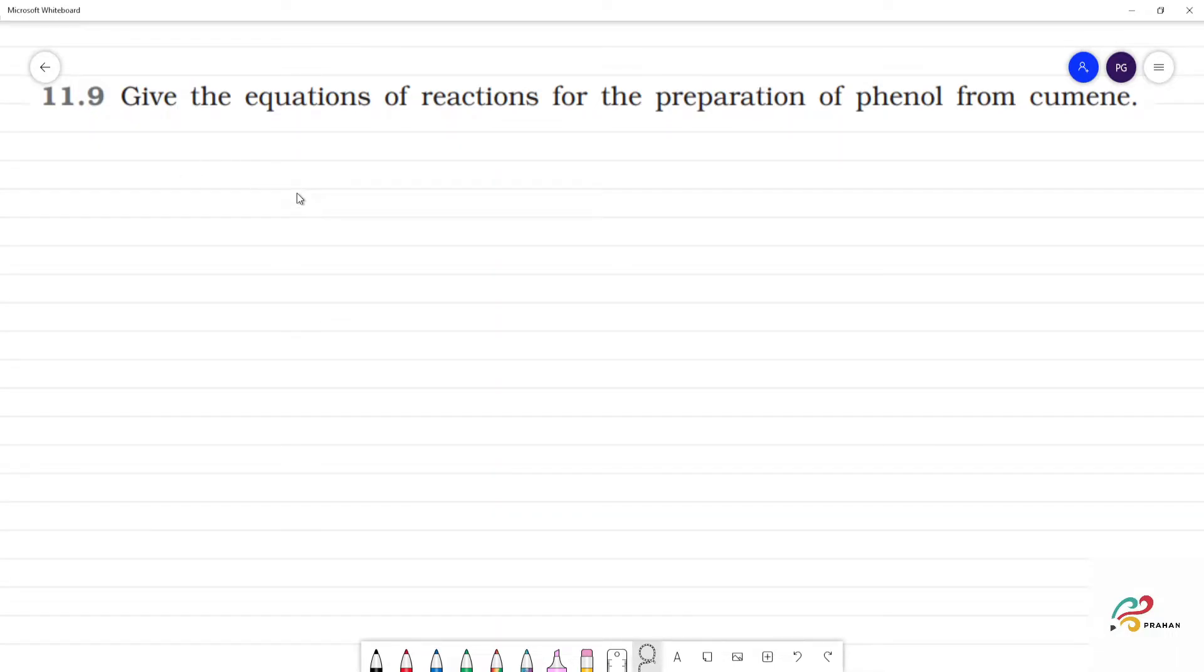Give the equations of reactions for the preparation of phenol from cumene. Cumene is isopropylbenzene.